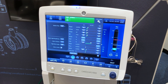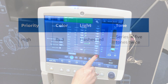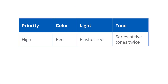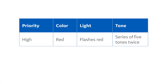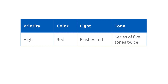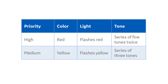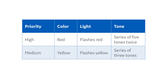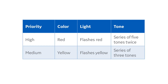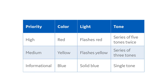The alarm priority is as follows. High priority alarms are red with a series of five tones, medium priority alarms are yellow with a series of three tones, and low alarms are blue with a single tone.